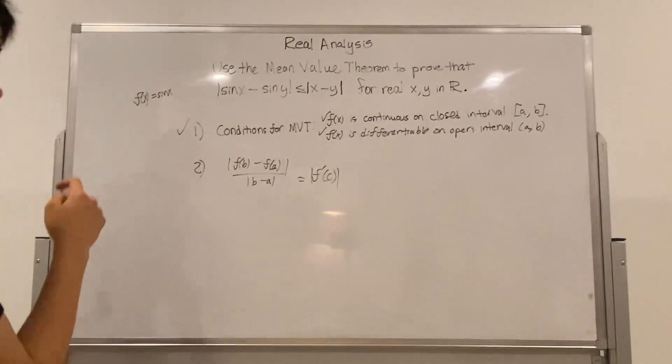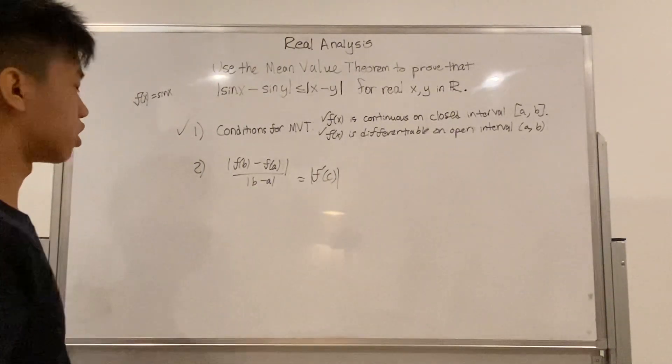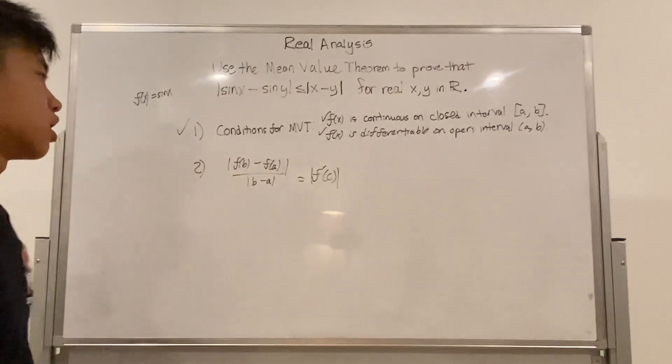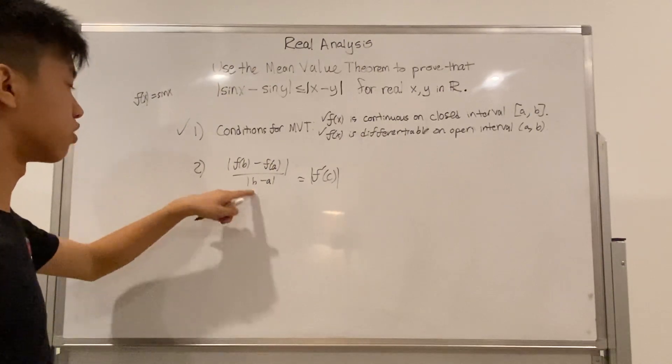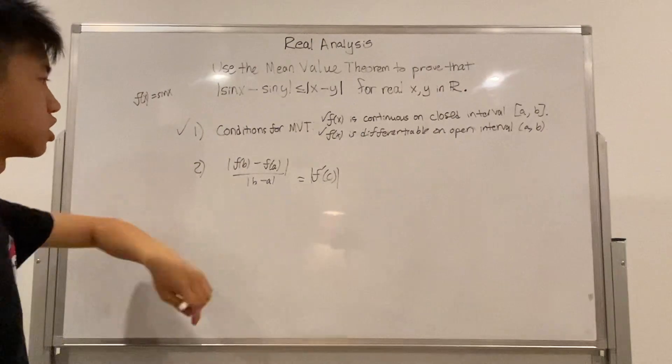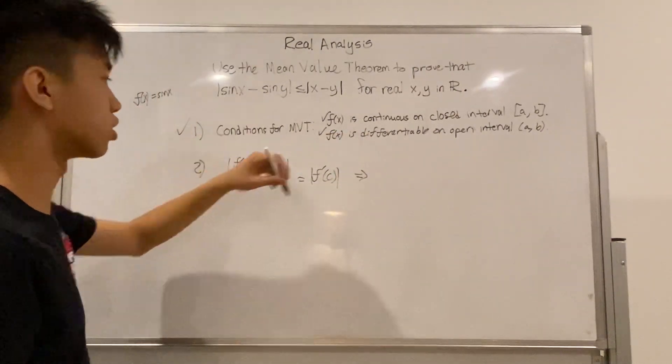So what does this mean? Well, you know that if the mean value theorem is satisfied, there exists an x equals c such that f prime of c is equal to the average rate of change of the entire function over the interval a to b. So in this case, we know that b is going to be x.